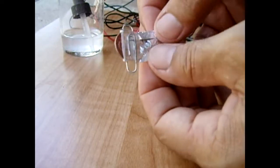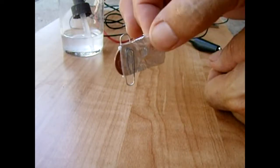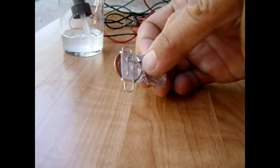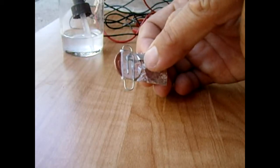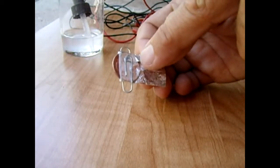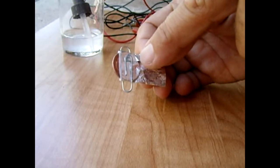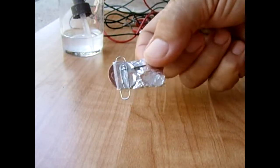And then there you have it. That is one completed cell right there. This particular cell will put out around seven tenths of a volt, anywhere from 20 to 40 milliamps. So this one's ready to go. You're going to repeat the process five times.